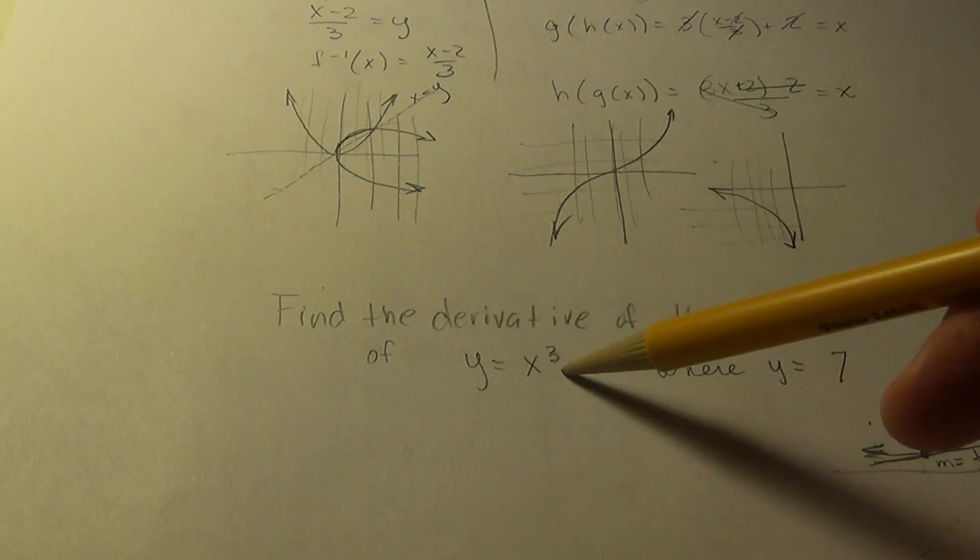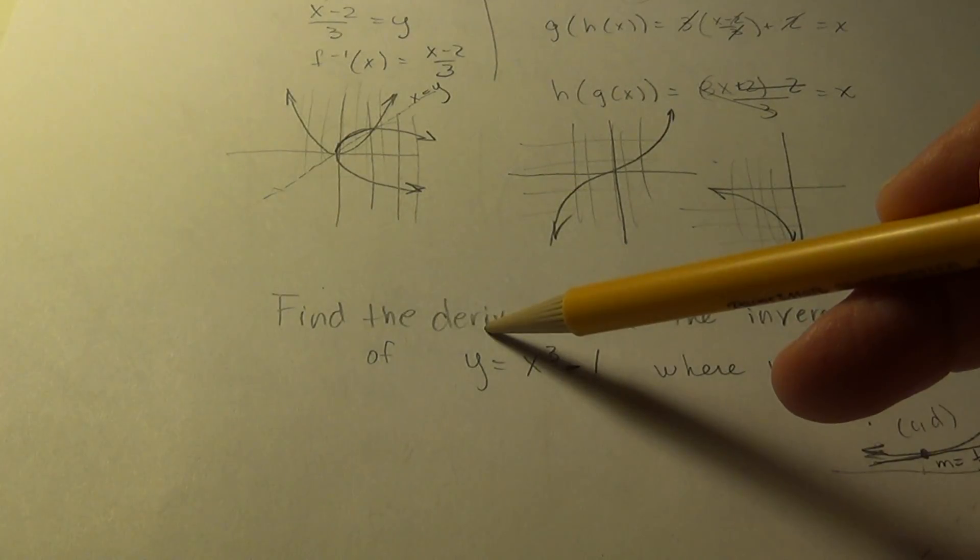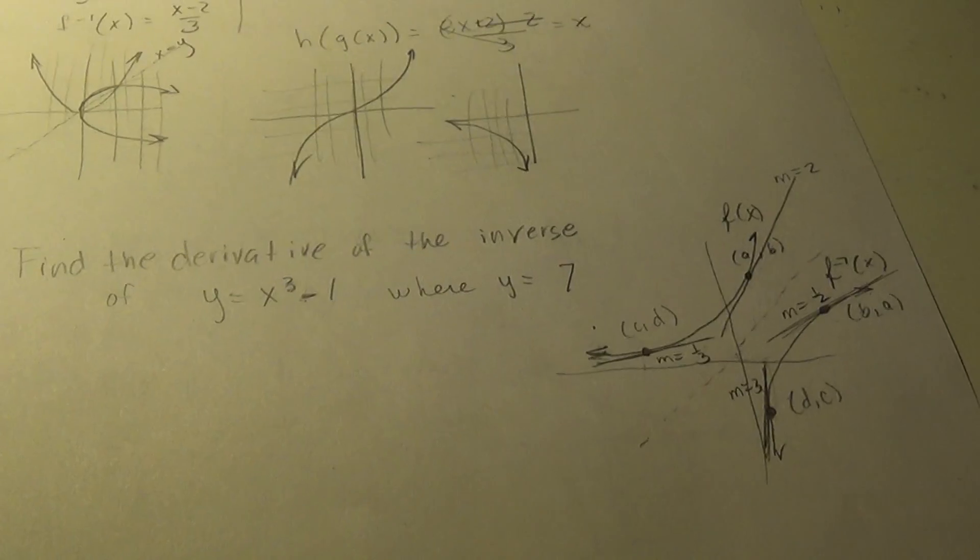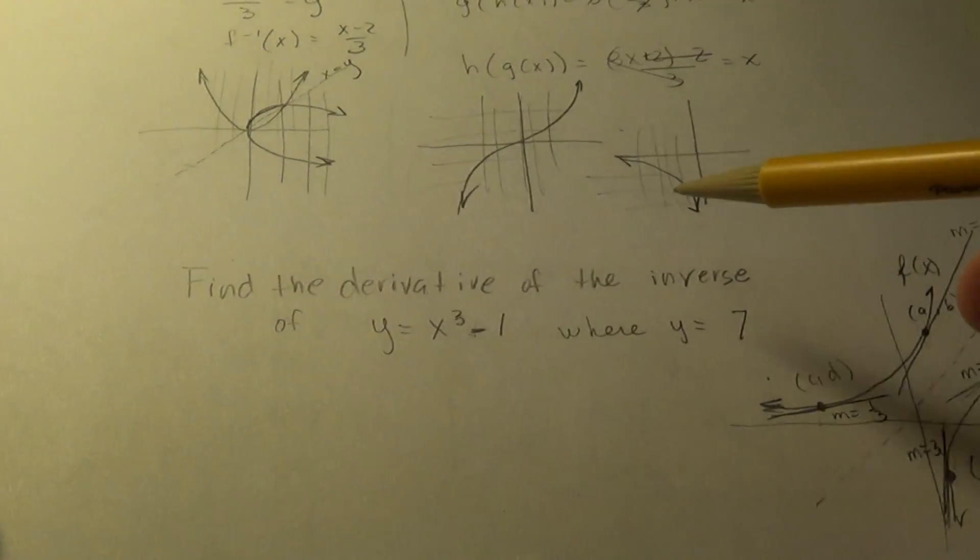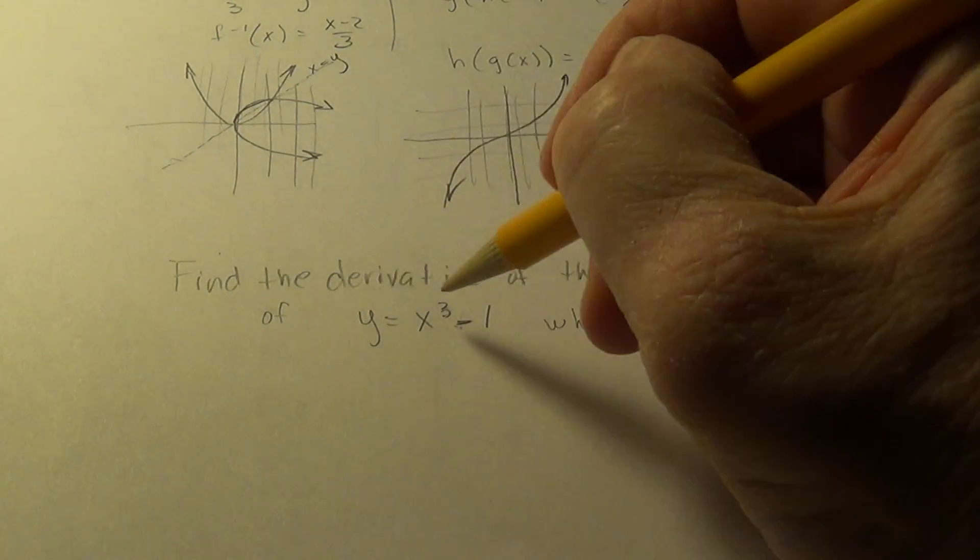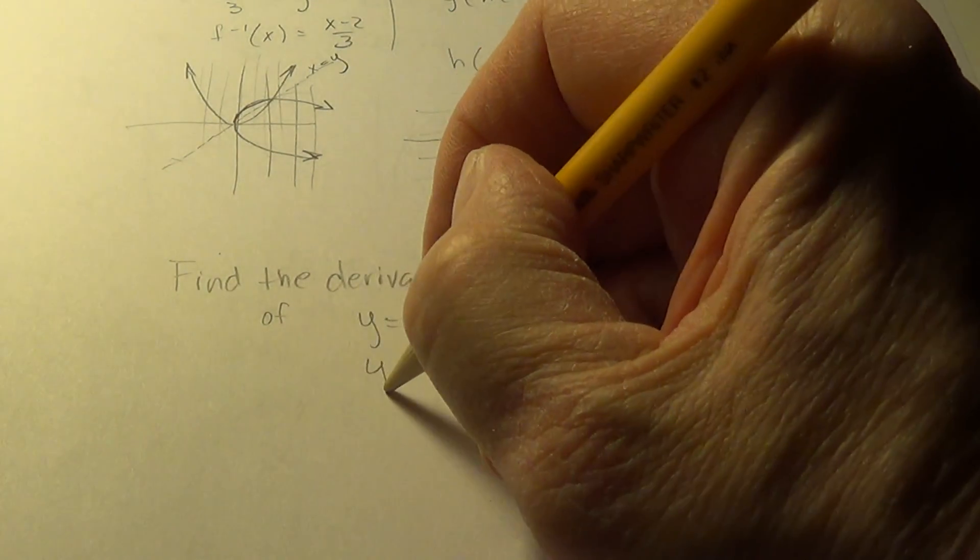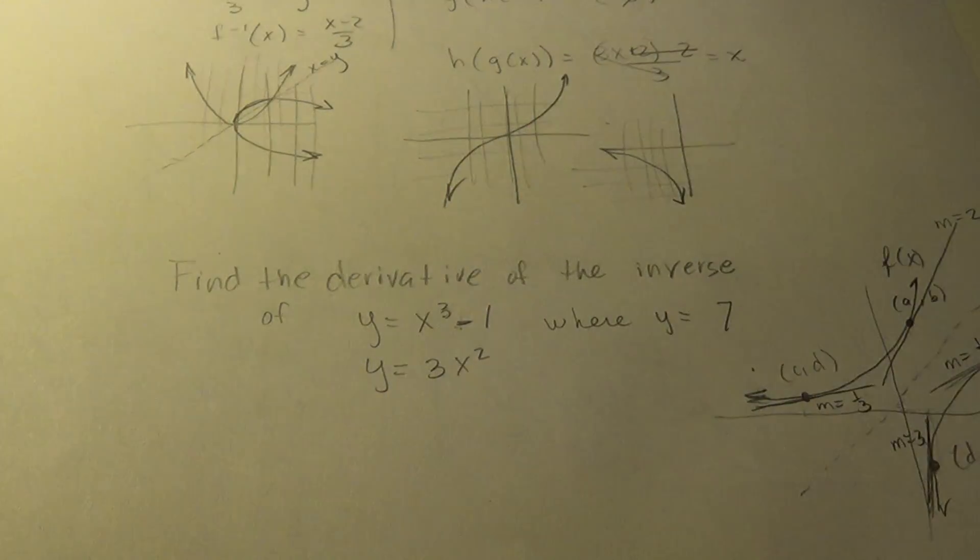So, instead of switching this to the inverse and then finding the derivative, we're going to just work with these concepts. So, the concept says, find the derivative of the original function. In this case, it's y equals 3x squared.